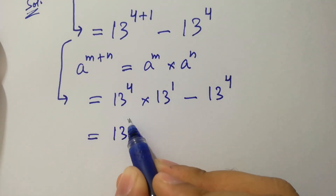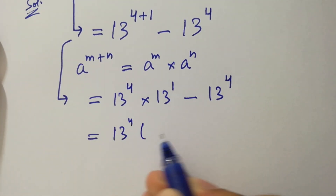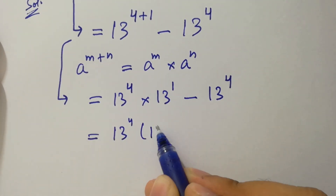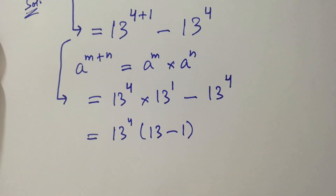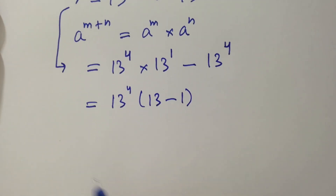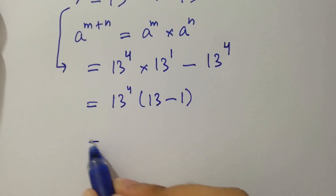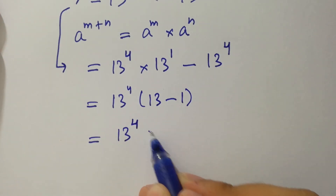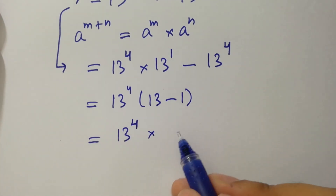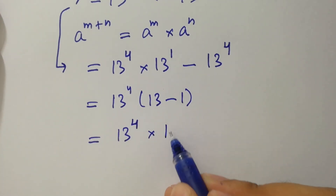13 to the power 4 can be factored out as common. We have 13 to the power 4 times 13 minus 1, and 13 minus 1 is 12.